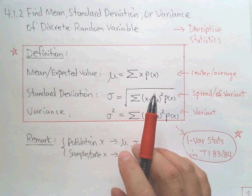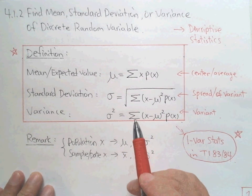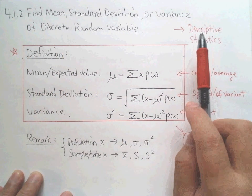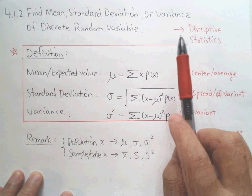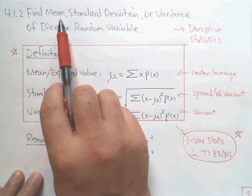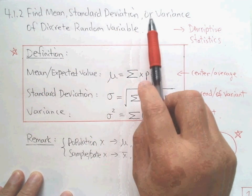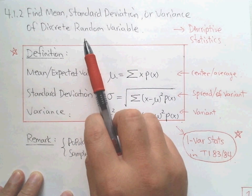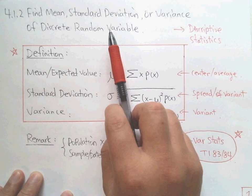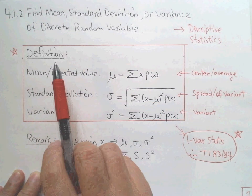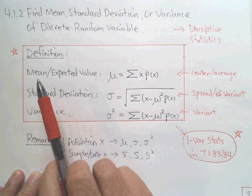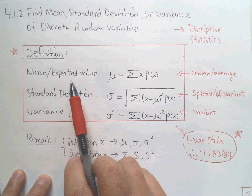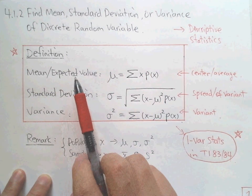Hello, this is Paul. In this lecture we're going to introduce the descriptive statistics for a random variable, including the mean and the standard deviation or the variance. You may have learned this before, but this time you learn it differently — for the random variable. The mean is the average, or we call it the expected value, because that's the most likely outcome.